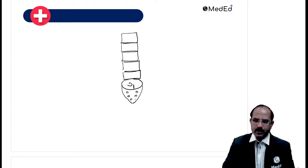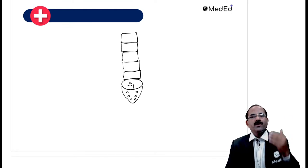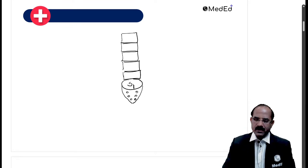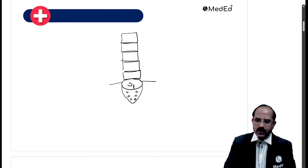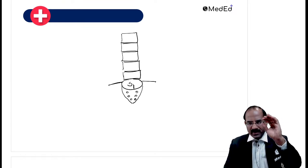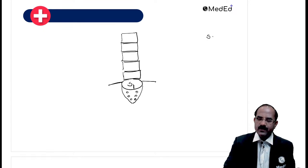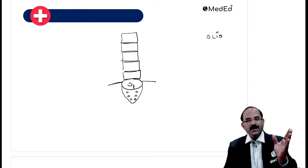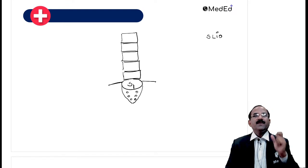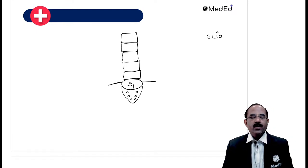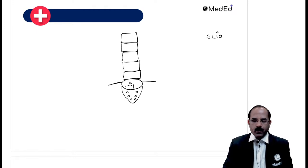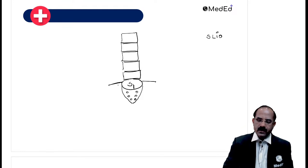These are the pelvic sacral foramina. What emerges from here? The ventral rami of the pelvic nerves. On either side is the ala of sacrum. The relations of the ala of sacrum - medial to lateral: S is the sympathetic chain, L is the lumbosacral trunk, I is the iliolumbar artery, and O is the obturator nerve - SLIO. That's the sacral promontory, sacrum, pelvic sacral foramina, and the ala of sacrum.